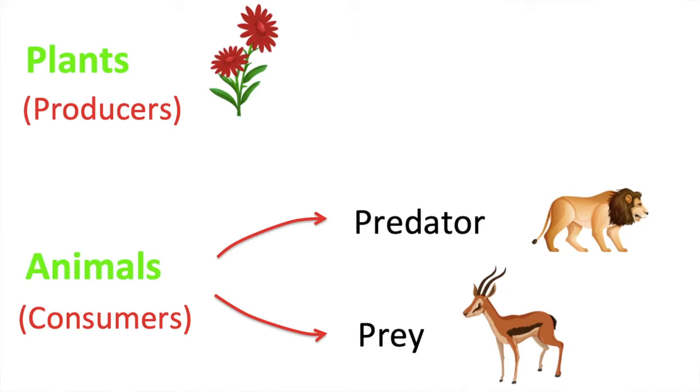A food chain shows us how plants and animals depend on each other for food. The energy in the food passes along the food chain. Food chains usually begin with a plant and end with a large animal.